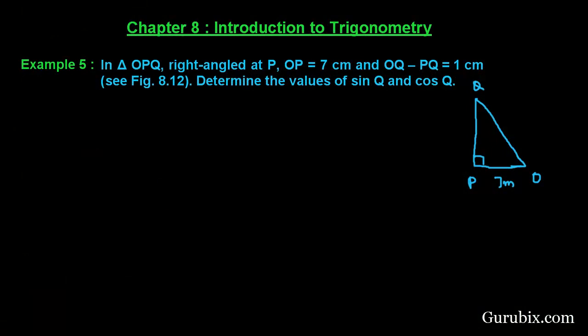Welcome friends, let us solve example number 5 of chapter 8. The example says: in a triangle OPQ right-angled at P, OP is 7 centimeters and OQ minus PQ is 1 centimeter. Determine the value of sine Q and cos Q.